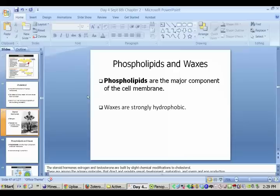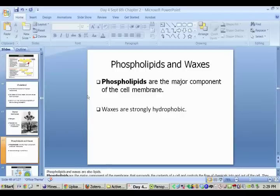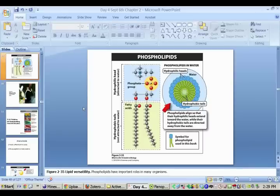We have phospholipids and waxes. Your body builds this waxy buildup in a certain area in your ears. Phospholipids are major components of the cell membrane, and the wax in your ear helps to protect your eardrum from water getting into your eardrum.